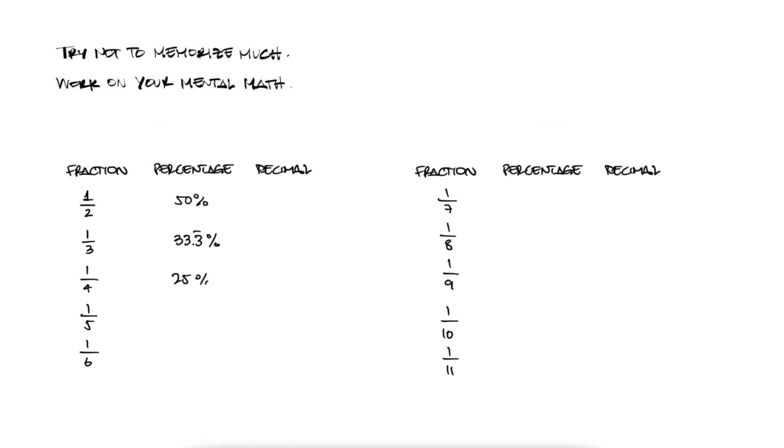that 0.6 repeating is two-thirds, or that, and this is a hard one but a common one, 0.142857 repeating is one-seventh. This is all there is to percentages, fractions, ratios, and decimals.